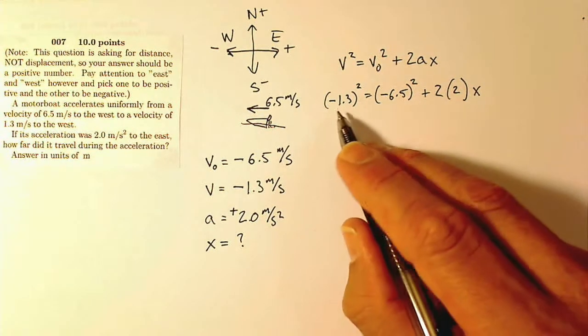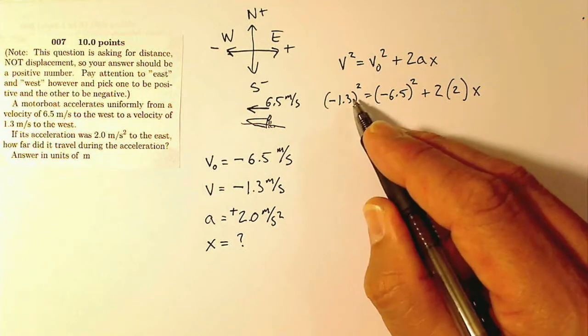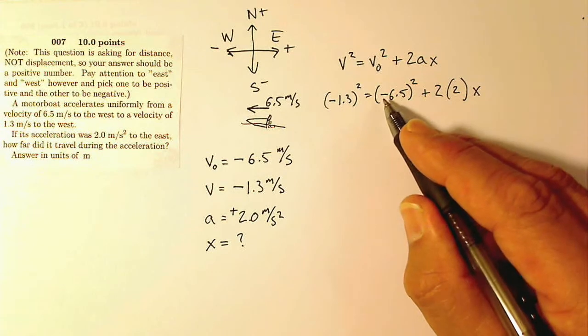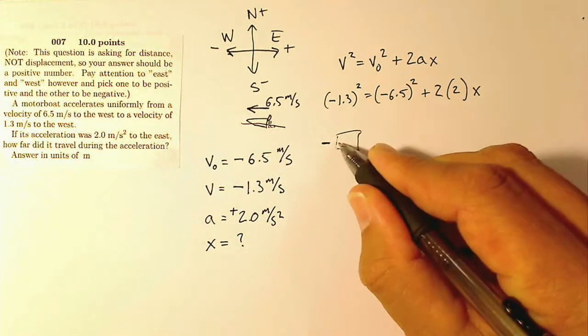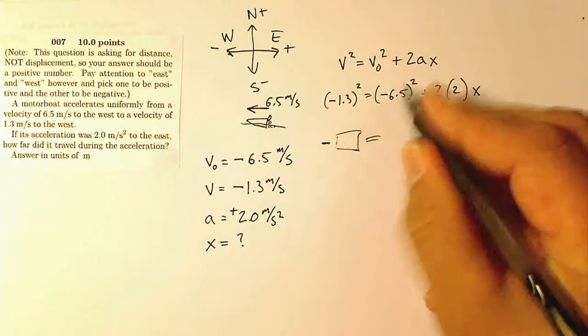Now when I do this, you'll see that negative 1.3 squared is going to be a smaller number. It's going to be positive, and this is going to be negative 6.5 squared. When I square that, it's going to be positive. When I subtract it, I'm going to wind up with a negative number over here somewhere. So whatever this result is, when I bring the 6.5 over, I'm going to subtract that.